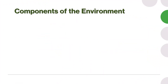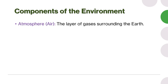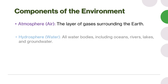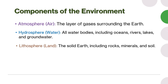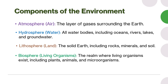The environment has four major components: atmosphere — the layer of gases surrounding the earth; hydrosphere — all water bodies including oceans, rivers, lakes, and groundwater; lithosphere — the solid earth including rocks, minerals, and soil; and biosphere — the region where living organisms exist, including plants, animals, and microorganisms.